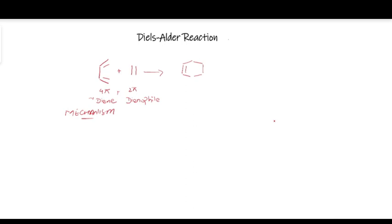This reaction is a pericyclic reaction. Pericyclic reactions involve the transfer of electrons in a concerted way, going through a cyclic transition state to yield the product. Let's see how the mechanism works.